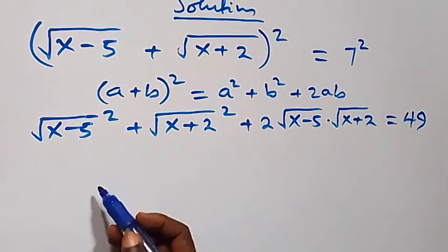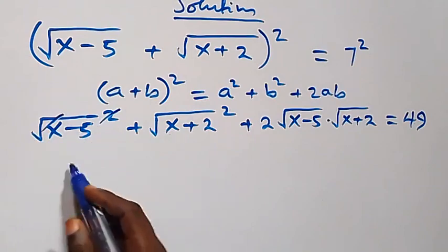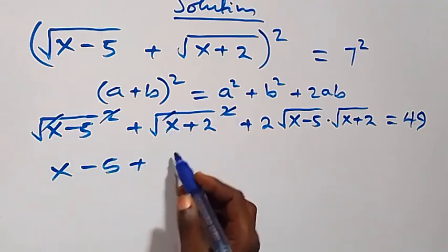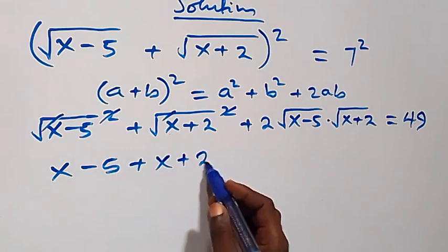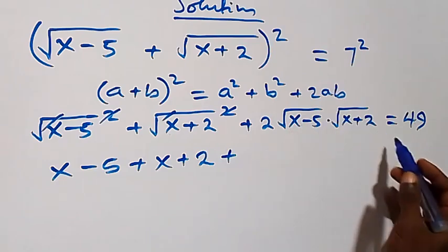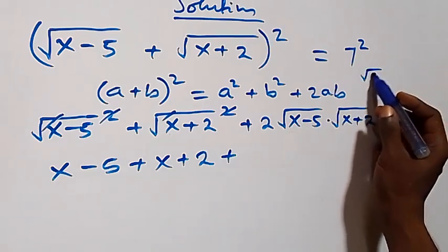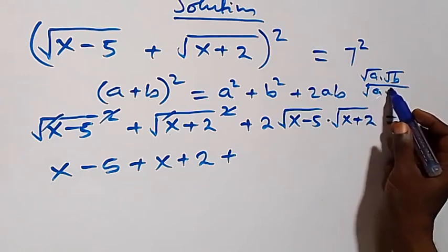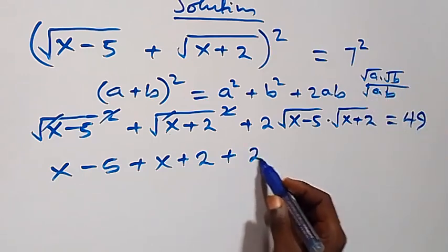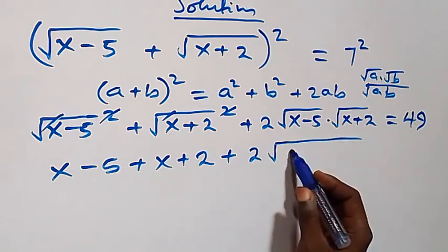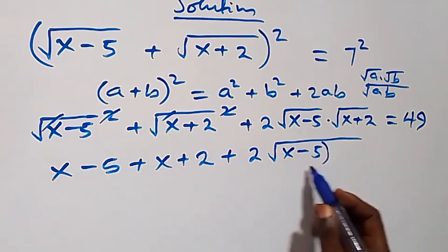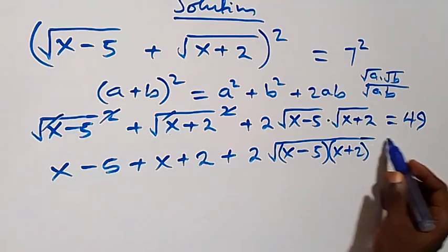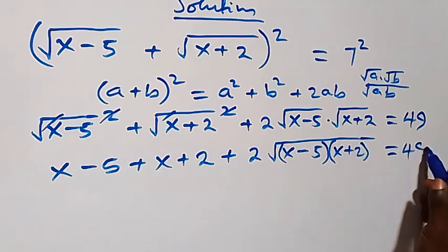The square cancels the square roots, so we have x minus 5 plus x plus 2. Then, using root(a) times root(b) equals root(a times b), we have 2 times square root of (x minus 5)(x plus 2), equals 49.